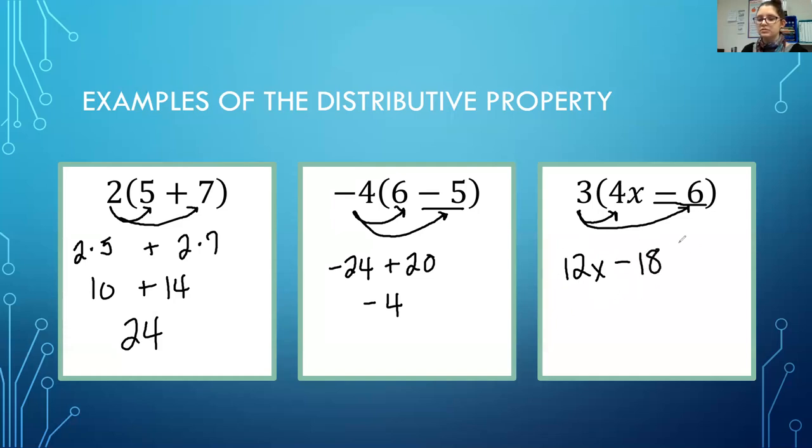This is in simplified form because if we think about this 12x, it's really 12 times x minus 18. And according to the order of operations we can't skip and subtract the 18 from the 12 because multiplication has to be completed first. So this is my actual final answer.